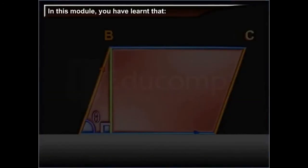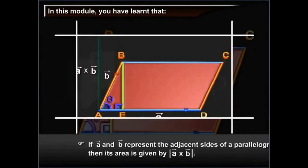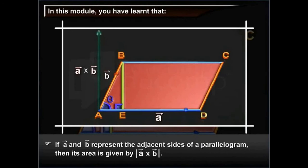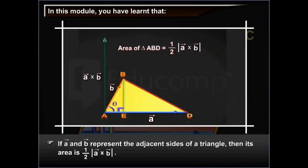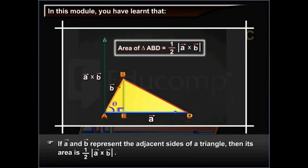In this module, you have learned that if vector A and vector B represent the adjacent sides of a parallelogram, then its area is given by the magnitude of vector A cross vector B. If vector A and vector B represent the adjacent sides of a triangle, then its area is given by half into magnitude of vector A cross vector B.